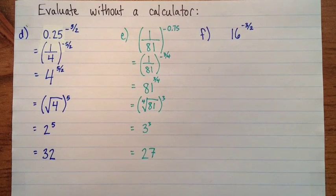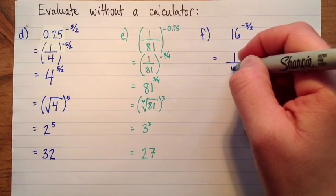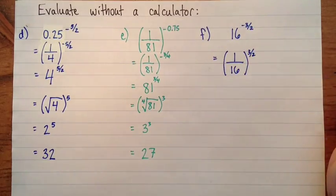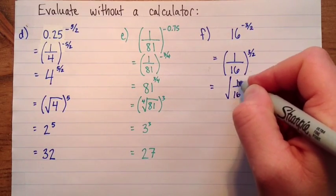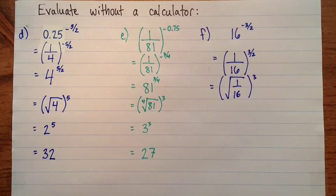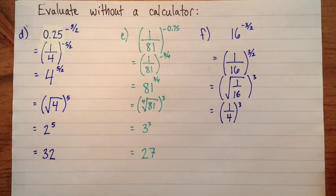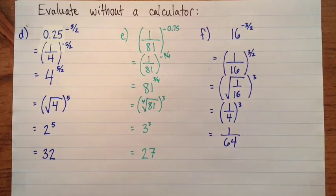And then one more. Here we have sixteen to the exponent negative three over two. So pause that and see what you can do with it. So I'll start and I'll deal with the negative first. So one-sixteenth to the exponent three over two. So that's the square root of one-sixteenth. And that's one-fourth cubed. One cubed is one, and four cubed is sixty-four.